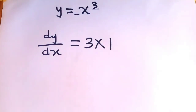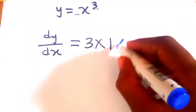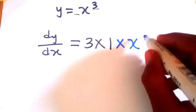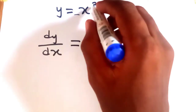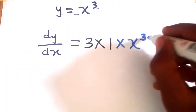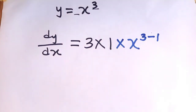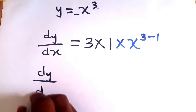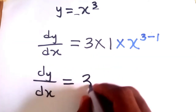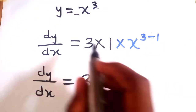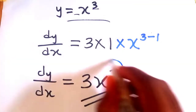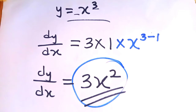So I'll have the power which is 3 times the coefficient of x here, which is 1. Then I'll have x raised to the new power, which is the power of the function minus one, so 3 minus 1. Simplifying: 3 times 1 is 3, and 3 minus 1 is 2. So the derivative of this function is equal to 3x squared.